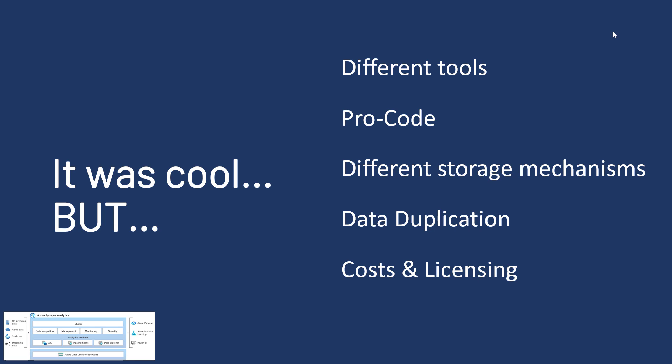One of the main issues that weren't quite good was different data storage mechanisms. There was the data lake — you could build a data lakehouse using Delta, but only with Spark. SQL serverless could read it, but the dedicated pools used a different database storage mechanism. This led to data duplication, with data being copied from the data lake into the data warehouse and back.